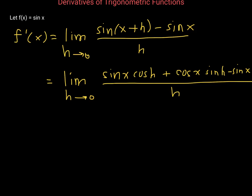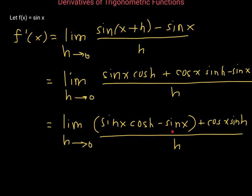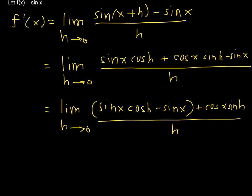Looking at this numerator, we can group sine of x times cosine of h together with the minus sine of x term, using the associative property of addition, which says we can group our addends however we want and the sum does not change. These two terms have something in common — namely sine of x — so let's factor out a sine of x.